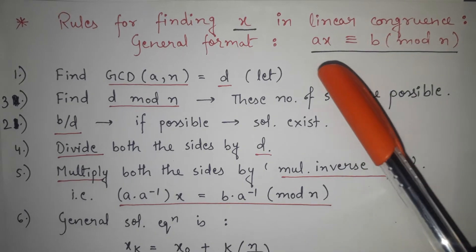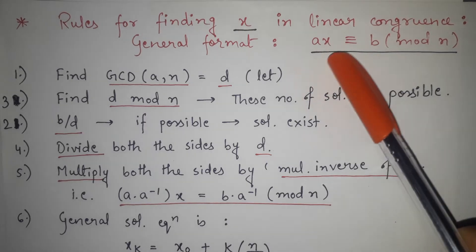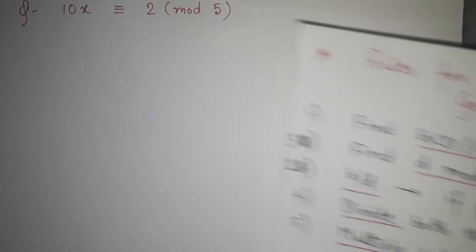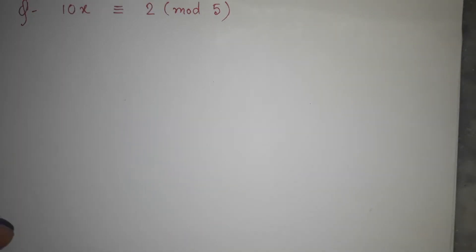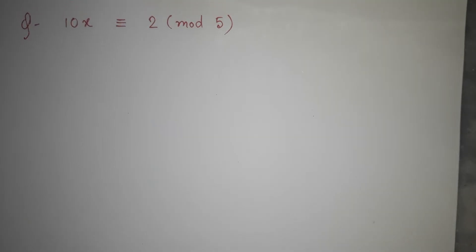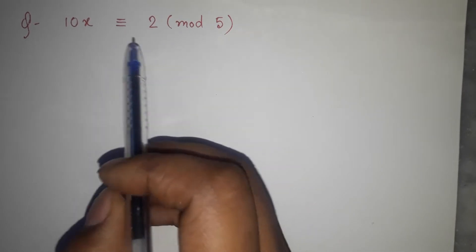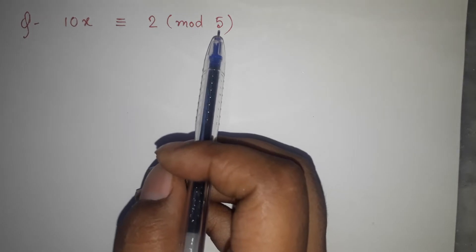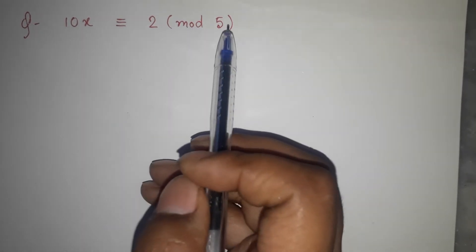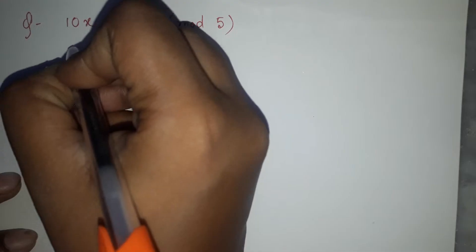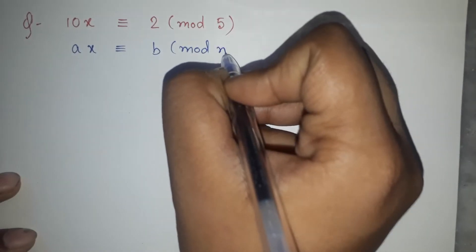In this video, we are going to solve an example — how with the help of these steps we can find the value of x from a given linear congruence equation. I will show two or three different types of examples so you get the idea of all kinds of examples. Let's start with this simple example: 10x ≡ 2 (mod 5). The general format is ax ≡ b (mod n).